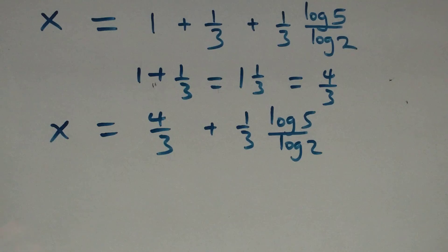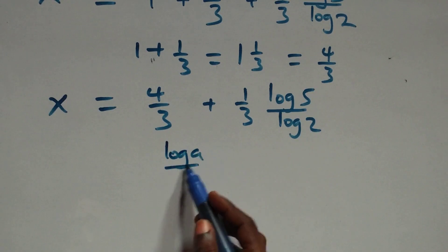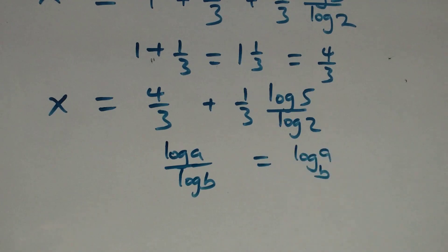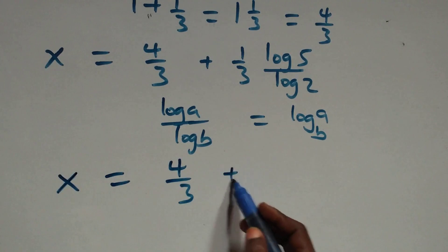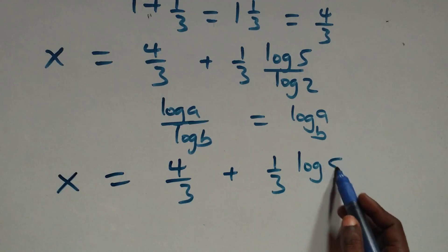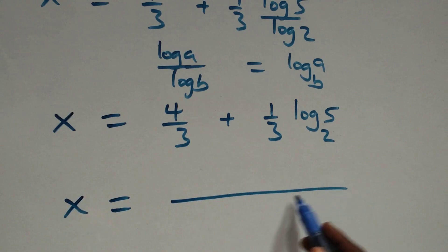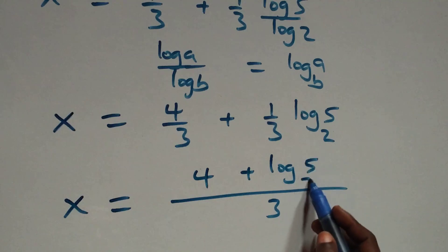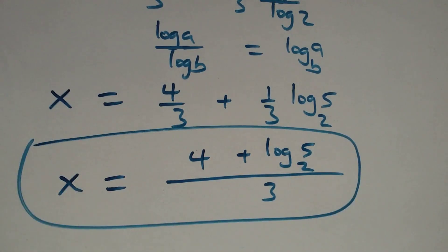Then we apply the change of base rule: log(a)/log(b) = log base b of a. What we have becomes x = 4/3 + (1/3)·log₂5. Bringing this together as a fraction, we have x = (4 + log₂5) over 3.